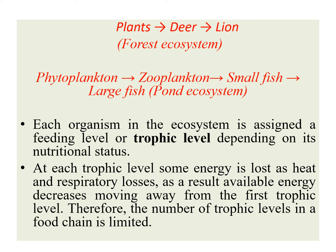A trophic level shows the designation or the nutritional status of a particular organism. In each trophic level, some energy is being lost as heat and respiratory losses. Thus, there is a net decrease in energy moving away from the first trophic level to the higher trophic levels. Therefore, trophic levels are always limited in a food chain.